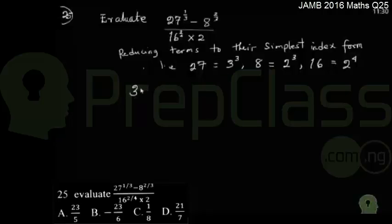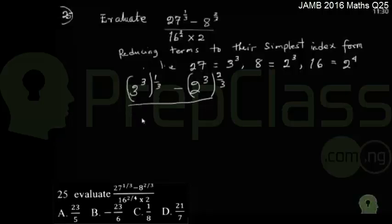Basically, this question can be rewritten as 3 raised to the power of 3, all raised to the power of 1 over 3, minus 2 raised to the power of 3 in brackets times 2 over 3, all over 2 raised to the power of 4 in brackets raised to the power of 2 over 4 times 2.